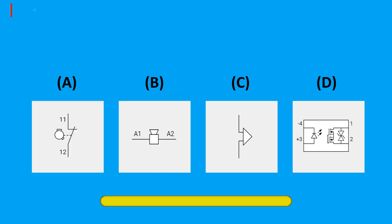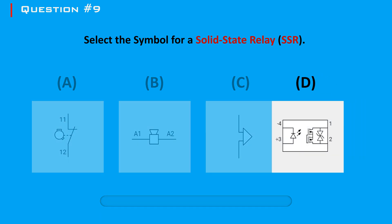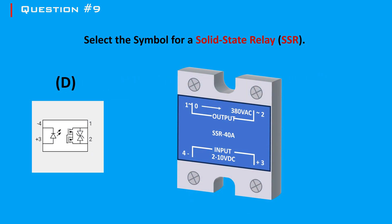Question 9: Select the symbol for a solid state relay. The answer is C — or D. A solid state relay (SSR) is an electronic switching device that uses semiconductor components to switch on or off a circuit without mechanical parts.